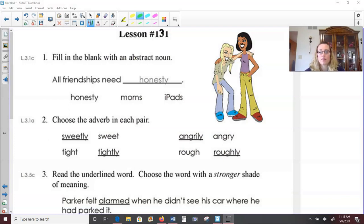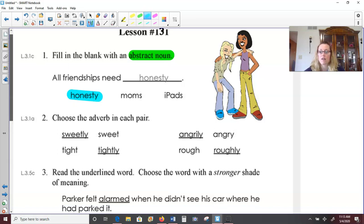Number one, fill in the blank with an abstract noun. A person, place, or thing we can't physically see. All friendships need honesty. All friendships need moms. Or all friendships need iPads. Well, you might think in order to get along with your friends or to be able to communicate with them that you need an iPad. But that would be a concrete noun. So we're going to go with honesty. Honesty is something we can't physically see, but we know it is a thing that we can have and we can exhibit. We just can't see it on its own.